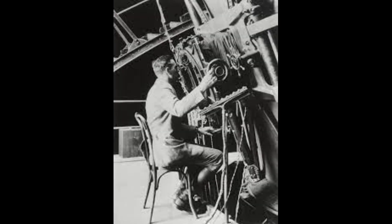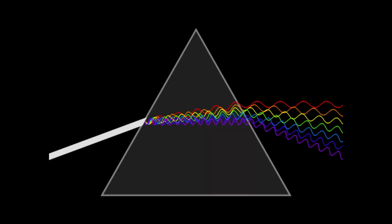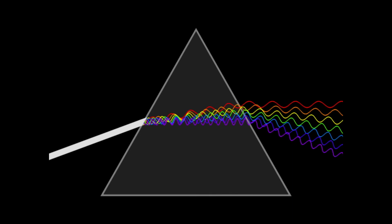Now Hubble couldn't hear galaxies moving away from him in space. But remember that light is also a wave and this feature could also be shown in light.